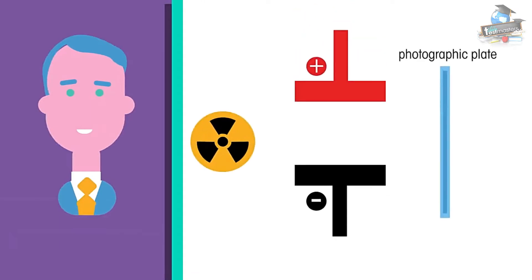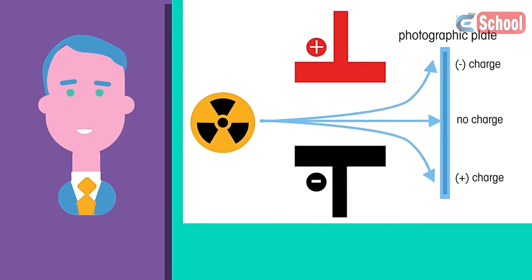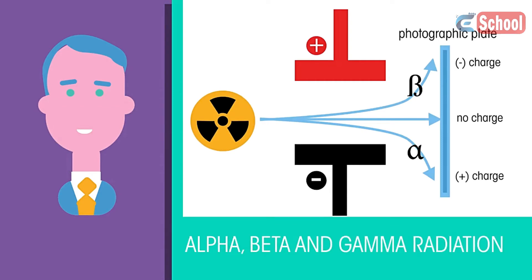Rutherford identified three types of radiation, two of which were deflected in an electric or magnetic field. These were identified and named as alpha, beta and gamma radiation. Here we will look more closely at their properties of penetration of matter.